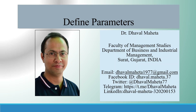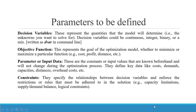Hello to all my viewers, this is Dr. Daval Mehta. Today we will understand defining the parameters in IBM ILOG CPLEX Optimization Studio. Basically, four parameters you will have to define when writing the command line. The first one is decision variables — this represents the quantities that the model will determine, that is, the unknowns you want to solve for. Decision variables could be continuous, integer, binary, or mixed. In the command line it is written as dvar.